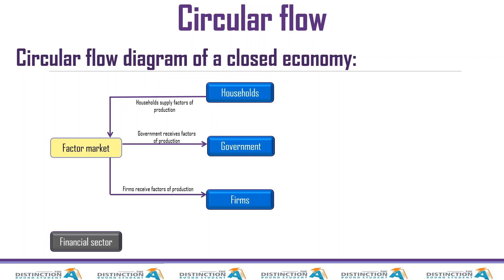In return, government and businesses pay for the factors of production. Depending on which factor you purchase, you pay accordingly. If you purchase labor, you pay wages and salaries. For land, households will get economic rent. For labor, households get wages and salaries. For entrepreneurship, households get profit. And for capital, households get interest. So this then becomes income for the household.